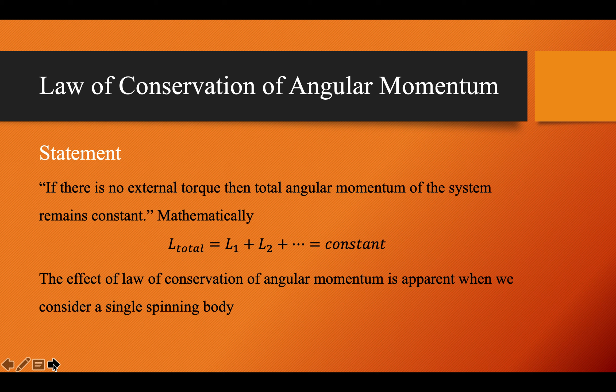Next is the law of conservation of angular momentum. Previously we studied the law of conservation of linear momentum: for an isolated system, the total linear momentum remains constant — meaning there is no external force. In angular motion, force is replaced by torque. So the statement becomes: if there is no external torque, then the total angular momentum of the system remains constant. Mathematically: L₁ + L₂ + ... = constant.